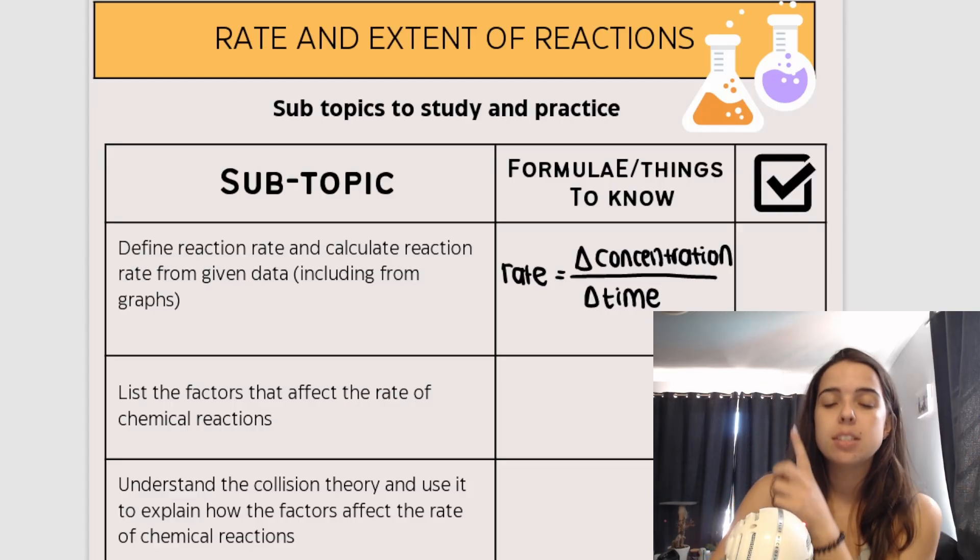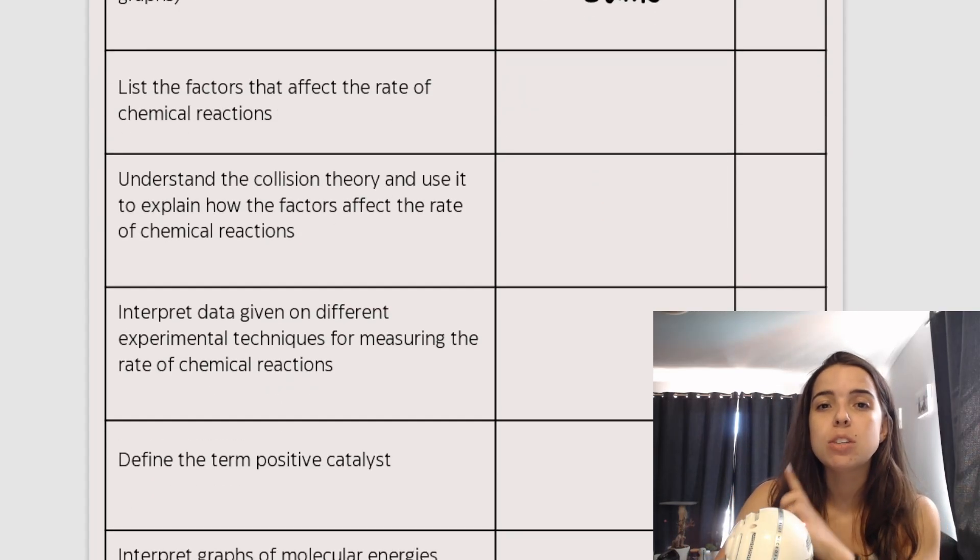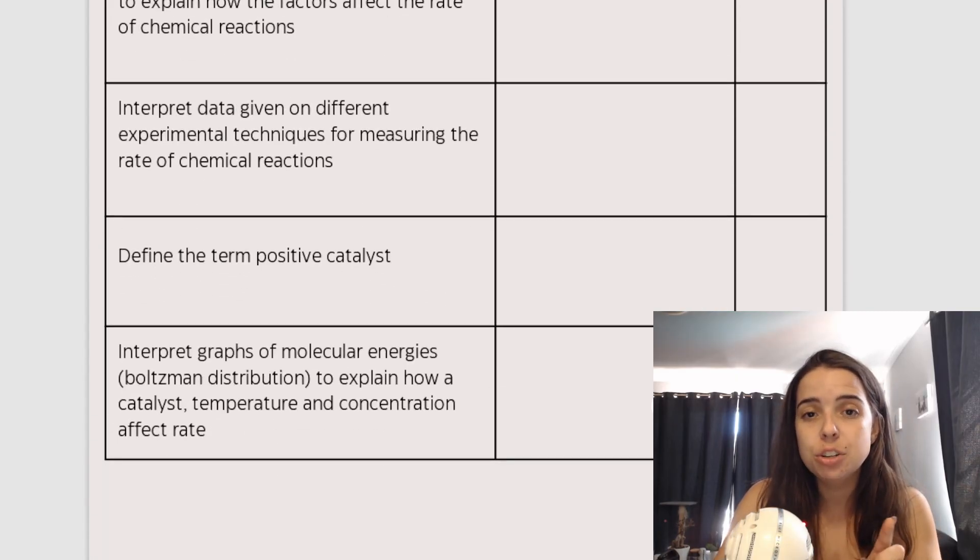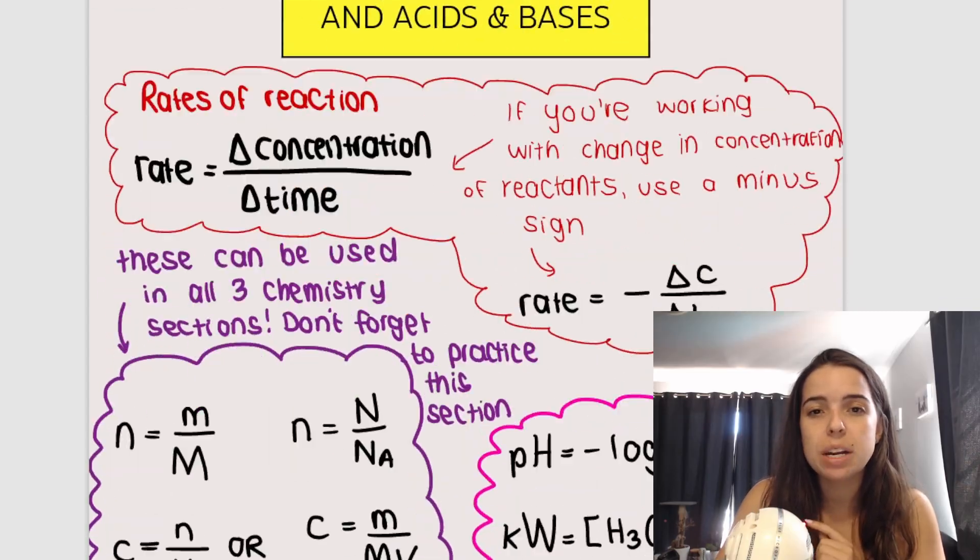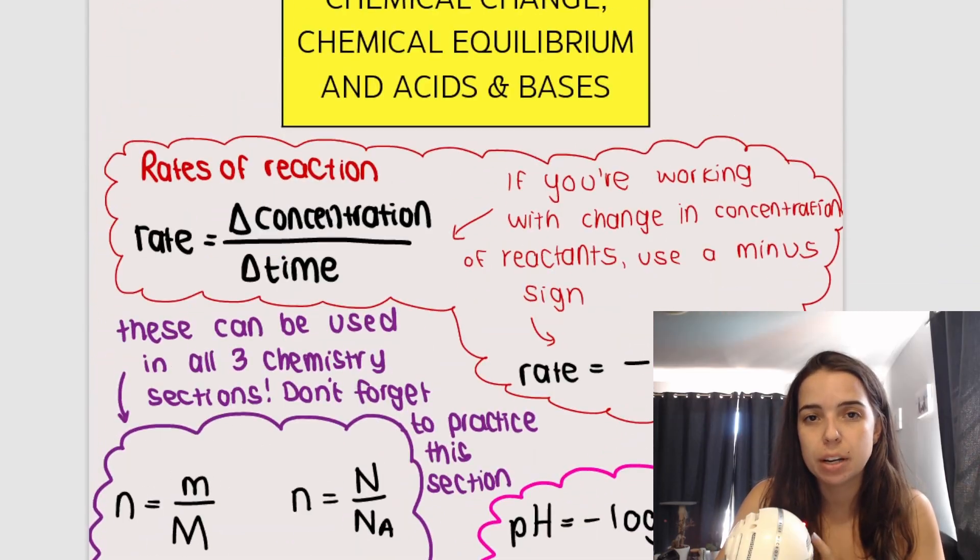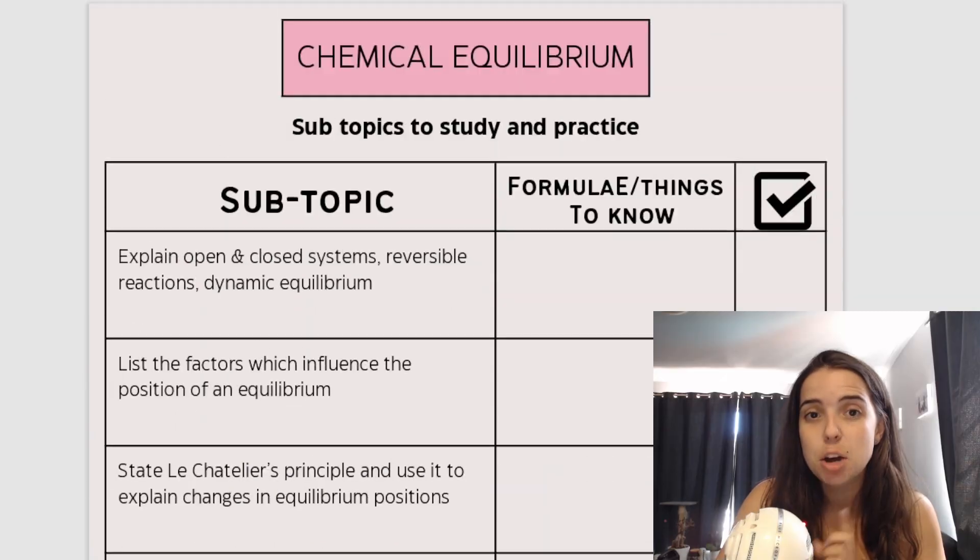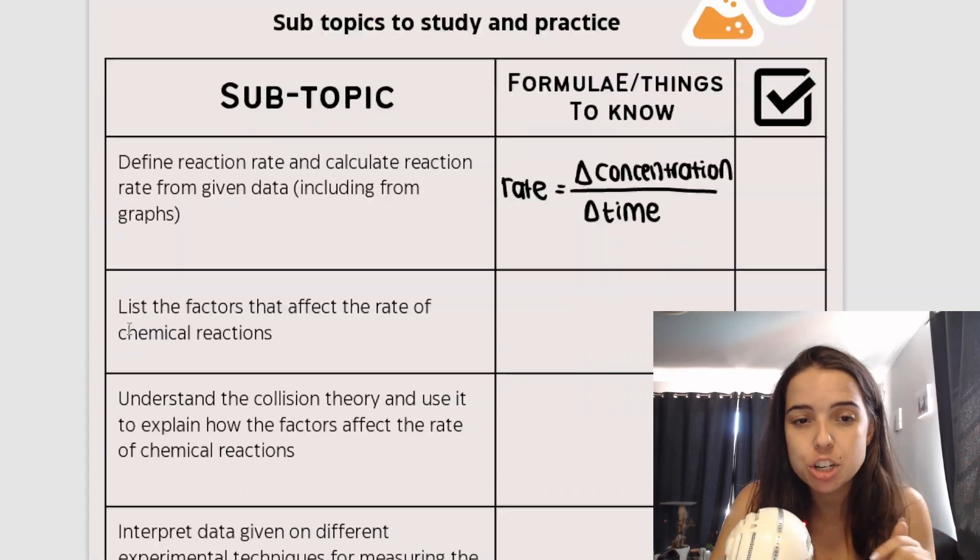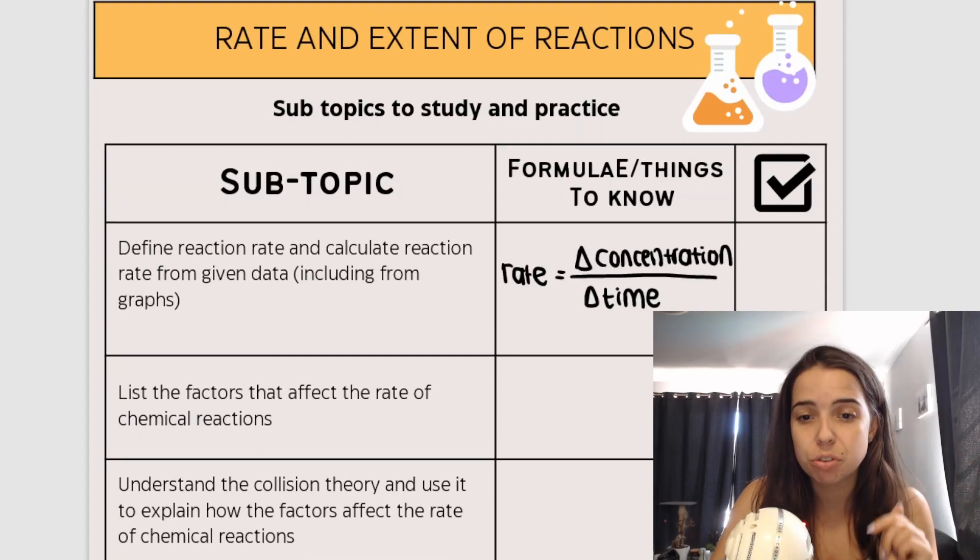So again, I've listed all the subtopics. You need to know how to do each and every one of these. And I do eventually list all the formulas that apply to this topic. But for now, just make sure that when you cover this topic rates and extent of reactions, you can do all of the different subtopics.